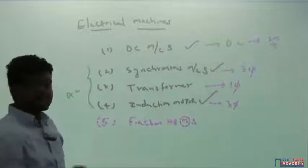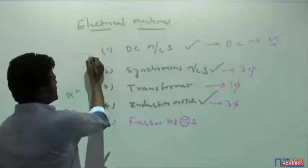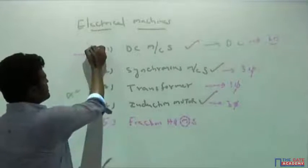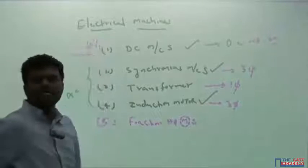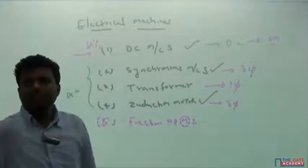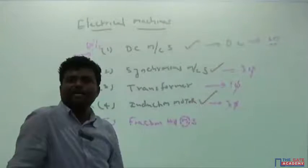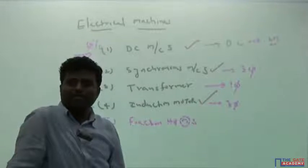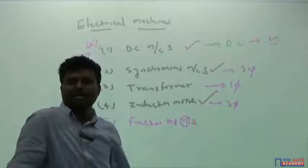Regarding syllabus content: once DC machines are done, about fifty to sixty percent of the syllabus is complete. The remaining topics — synchronous machines, transformers, induction motors, and fractional HP motors — have comparatively limited syllabus coverage compared to DC machines.